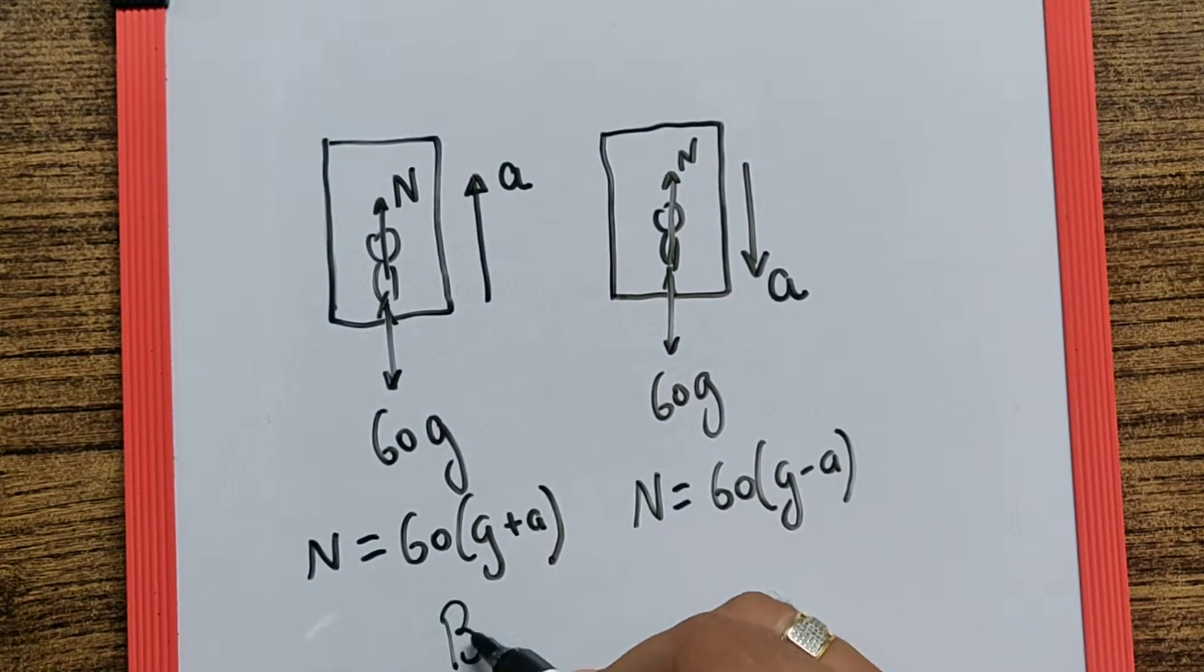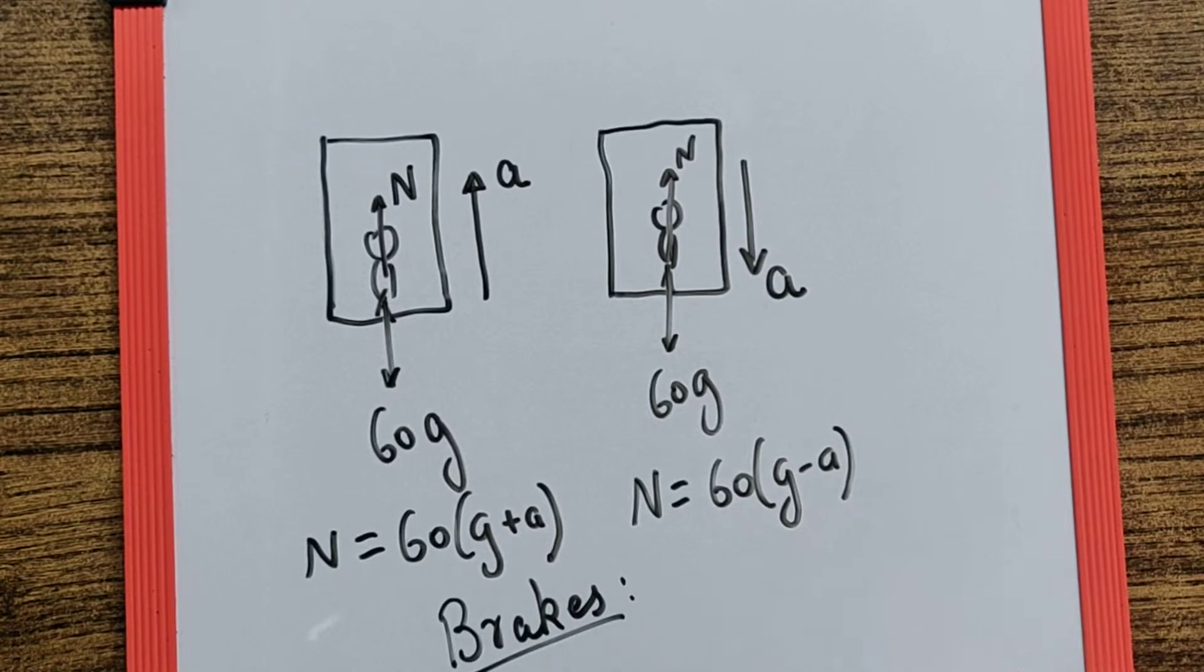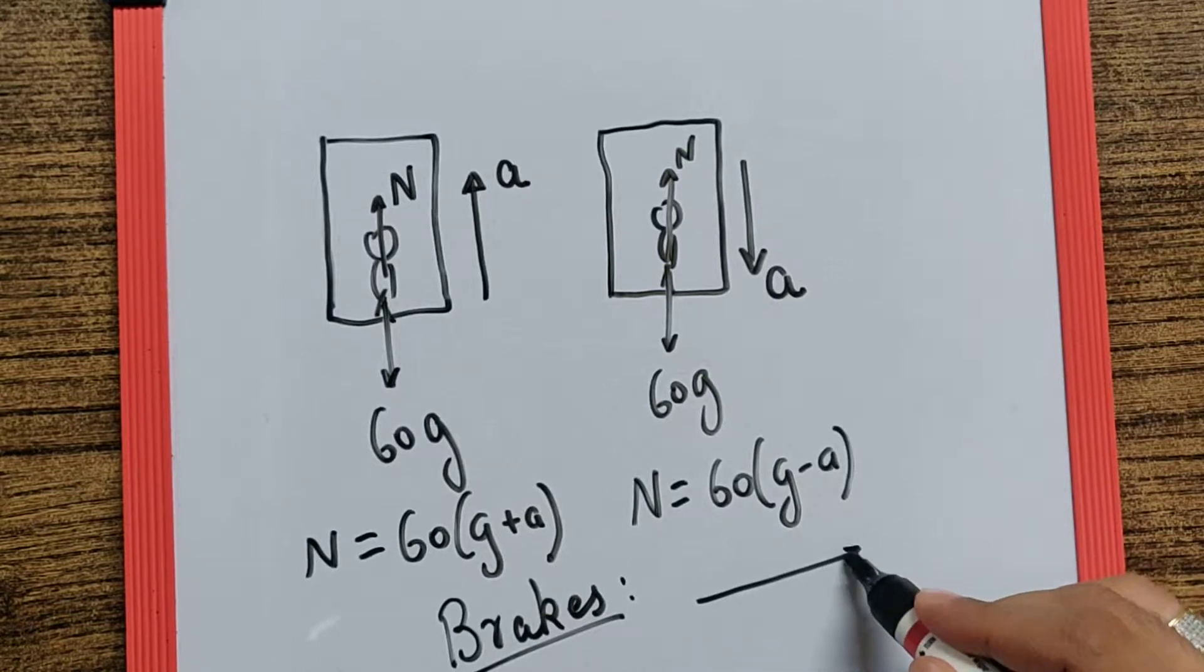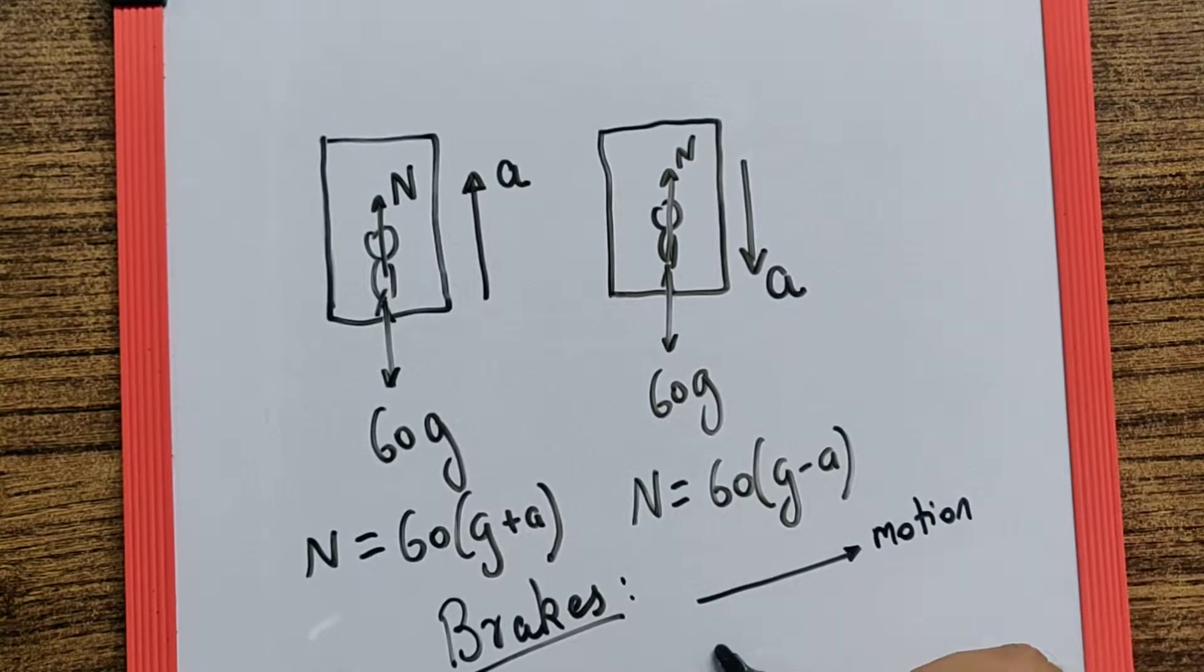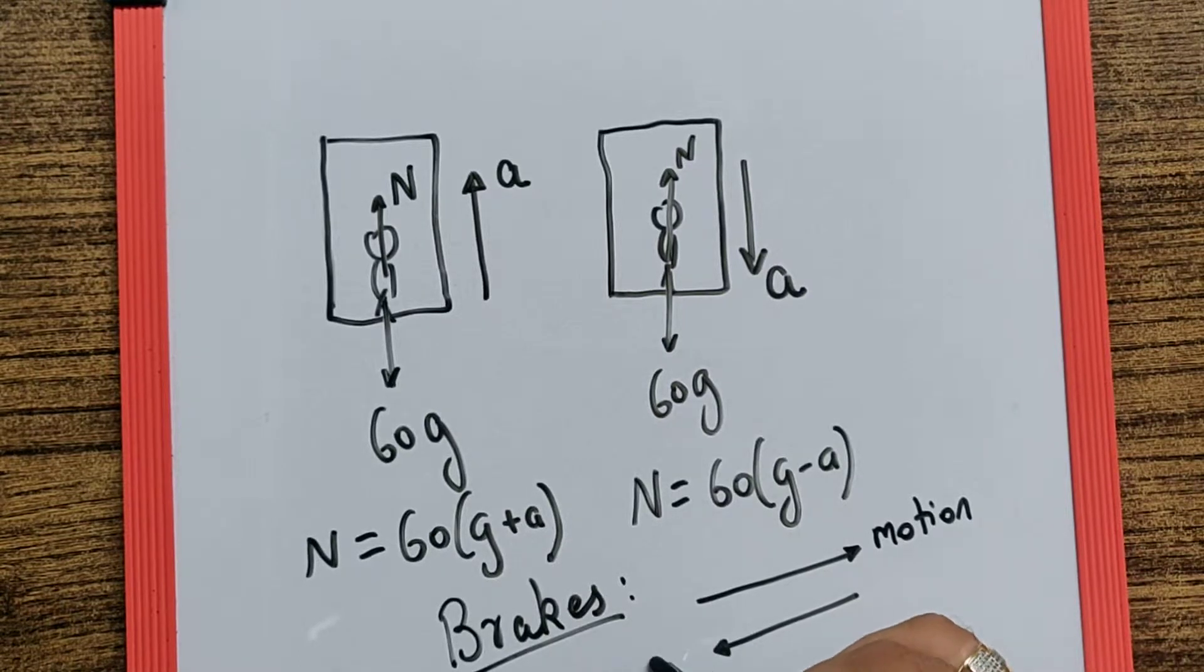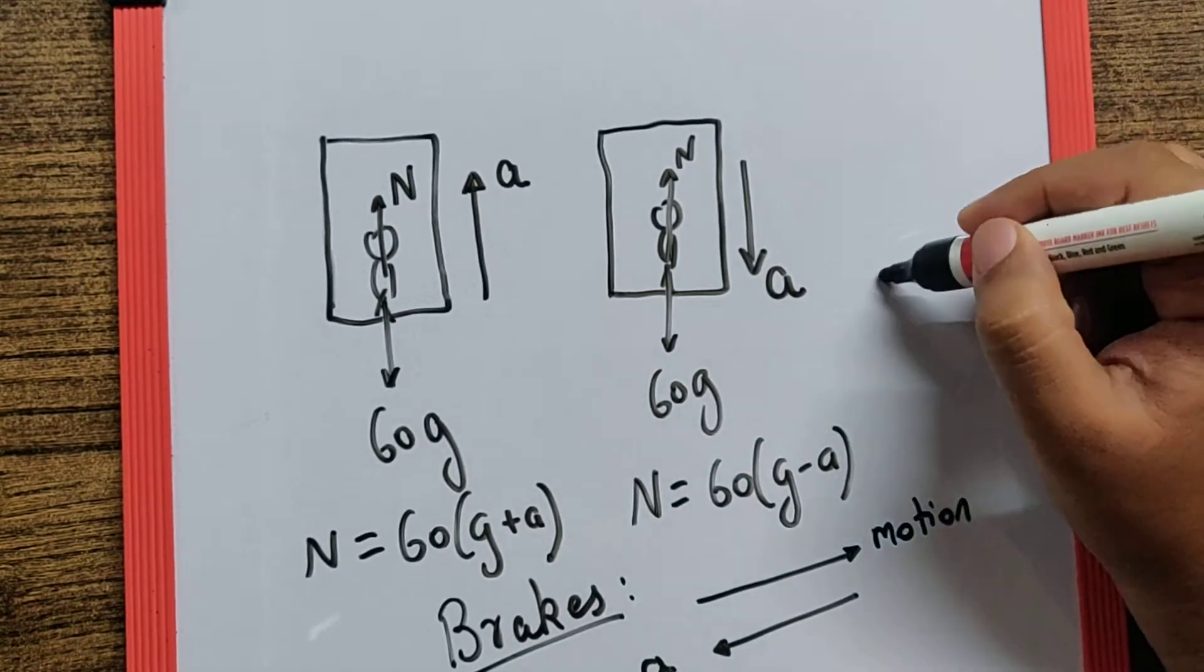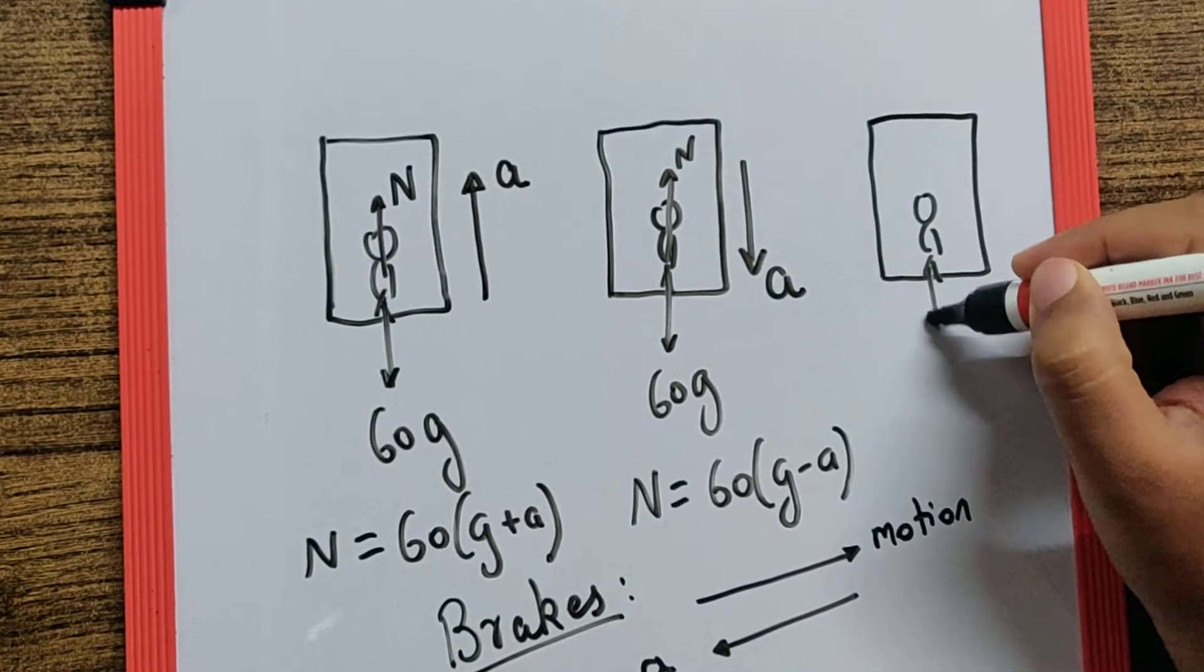But if I use a negative acceleration, which means I'm talking about brakes. Please understand, when you apply the brake, the motion of the body remains in the same direction but the acceleration acts in the opposite direction. And that is the time when we call it as a retardation, and that can apply for a moment.